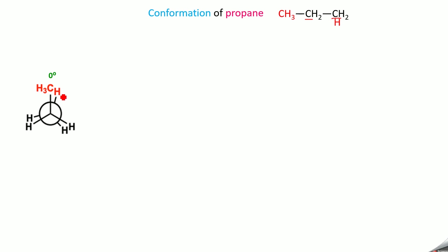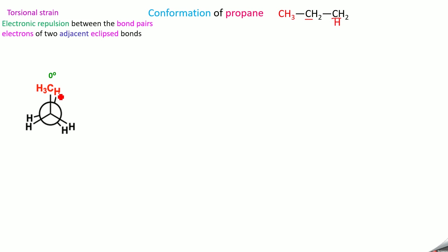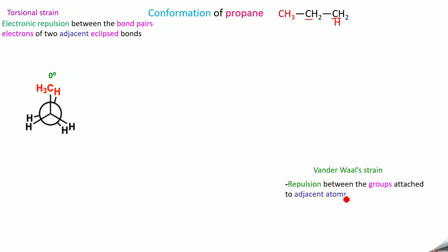At 0 degrees in propane, the CH3 group and hydrogen are very close to each other — they are eclipsed with each other. The electrons of this group repel the electrons of this group, which we call electronic strain, torsional strain, or eclipsed strain. It is defined as the electronic repulsion between bonded pairs of electrons of two adjacent eclipsed bonds. Also, the Van der Waals radii of this group and this group intersect with each other — that is Van der Waals strain, the repulsion between groups attached to two adjacent atoms.